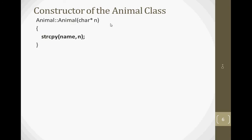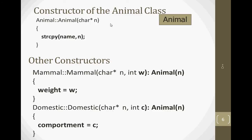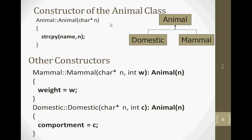The Animal class constructor implementation takes a parameter and copies it into the name member using the strcpy function. The Mammal class constructor calls the base class Animal constructor, passing the name parameter using the colon operator. Similarly, the Domestic class constructor calls the Animal constructor with the name parameter. Apart from that, weight and compartment are data members present in Mammal and Domestic respectively.